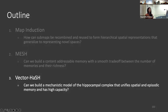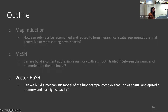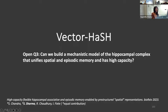Now that we've seen how we can build a high-capacity memory model that has a smooth trade-off in the number of memories that can be stored and the richness of those memories, we ask how both the functions of spatial mapping and memory can be implemented at the implementation level in the brain. More specifically, can we build a mechanistic model of the hippocampal complex that unifies spatial and episodic memory and has high capacity?